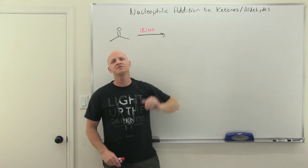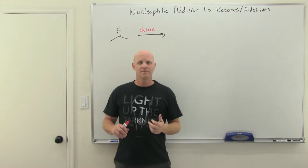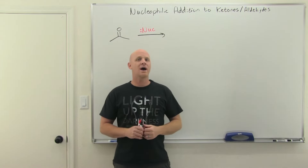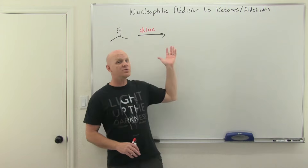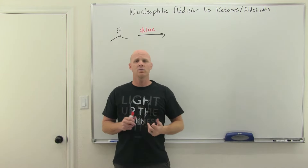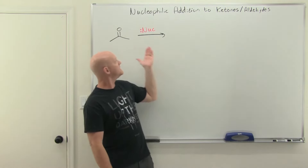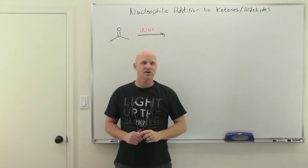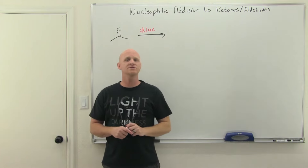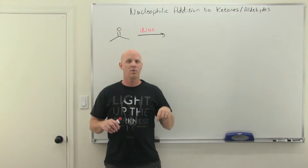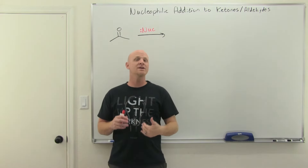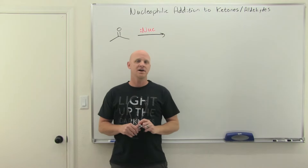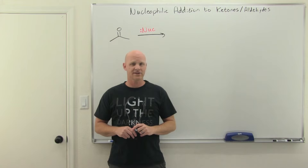An introduction to nucleophilic addition to ketones and aldehydes — that'll be the major topic of this lesson. Most of the reactions of this chapter are going to be a type of nucleophilic addition; we'll just be varying what nucleophiles we add. Ketones and aldehydes have a partially positive carbon, making them decent electrophiles, so there's a whole host of different nucleophiles we can add. We'll also cover the hydration of ketones and aldehydes and discuss relative reactivities in these nucleophilic addition reactions.